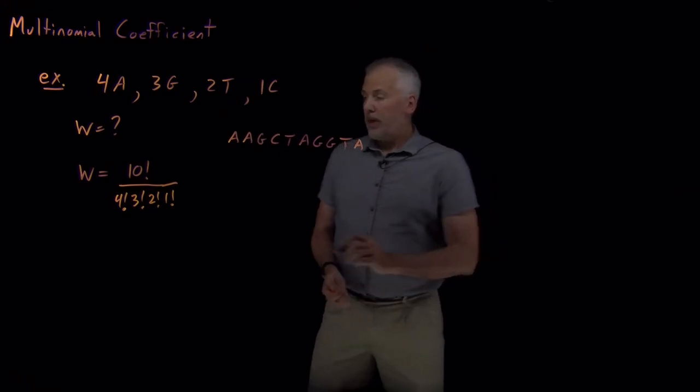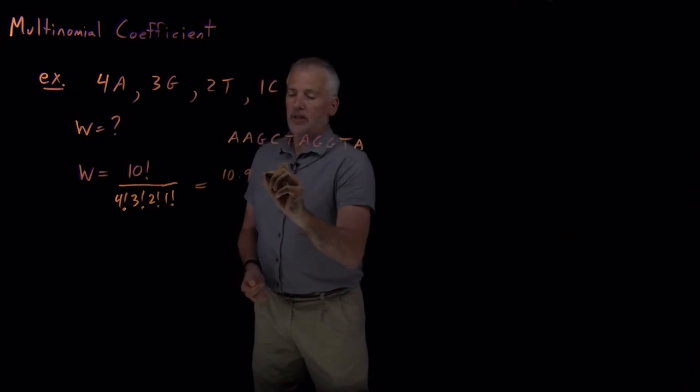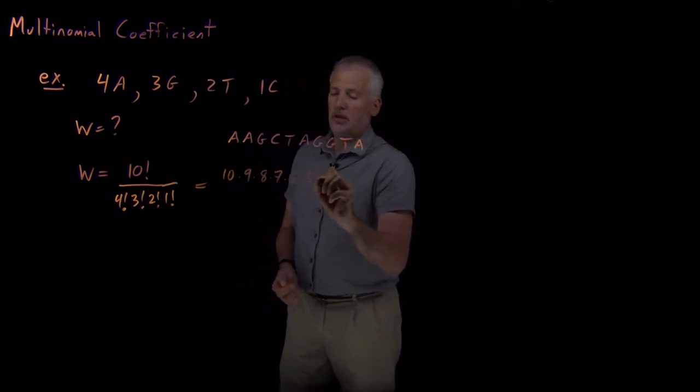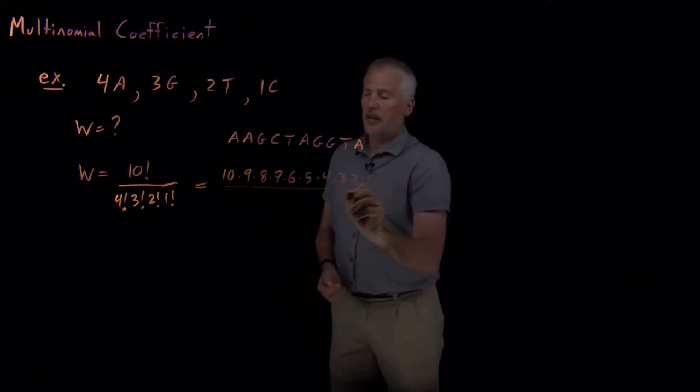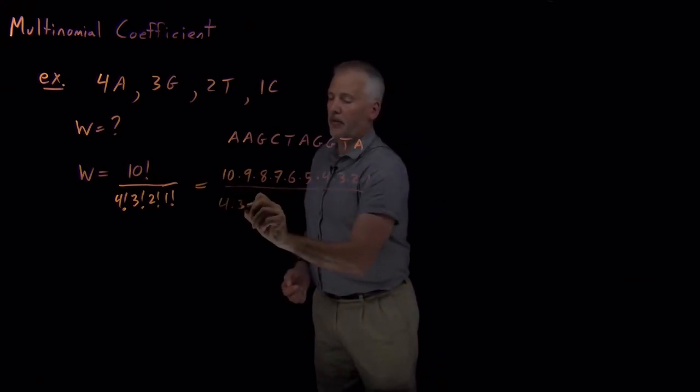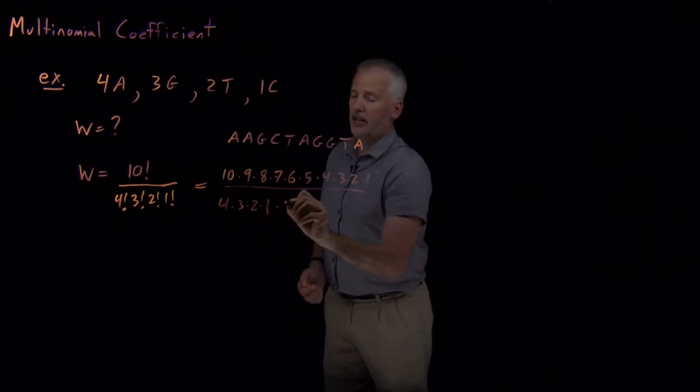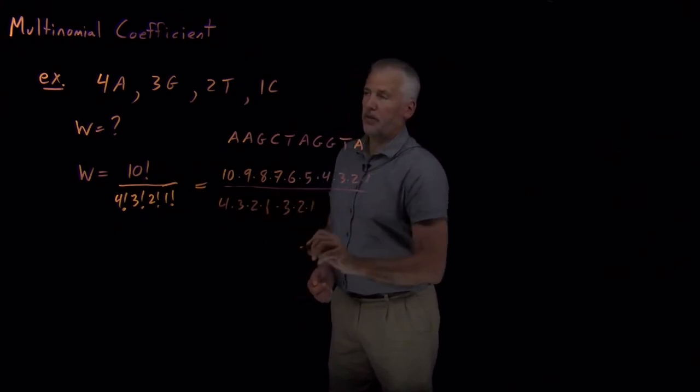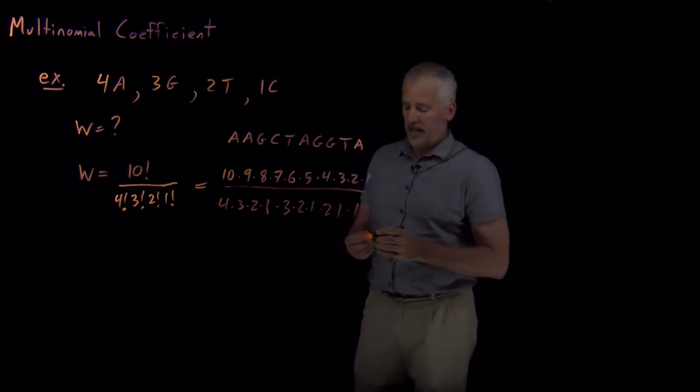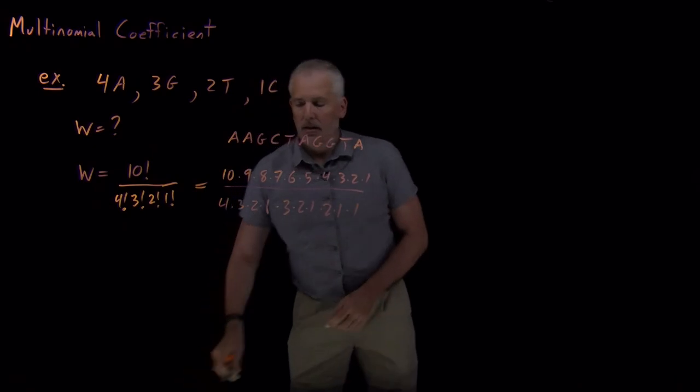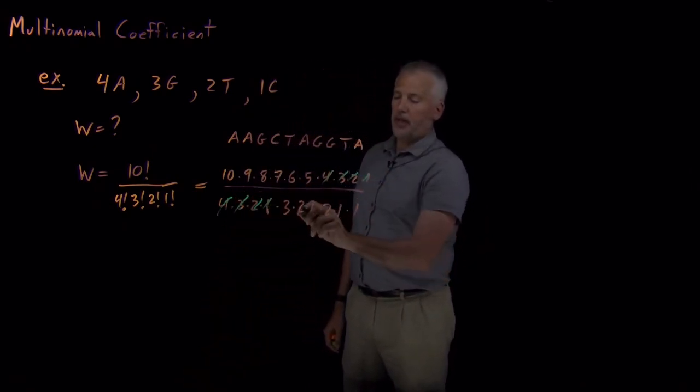So numerically, we can figure out what that number is. 10 factorial in the numerator, I divide that by 4, 3, 2, 1 for the A's, 3, 2, 1 for the G's, 2 and a 1 for the T's, and a 1 for the C's. So the 1's don't really matter. The 4, 3, 2, 1 kills the term up there.